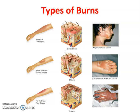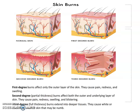The third degree burn — shown in the next picture — is where you're basically scorching and charring the skin. This can include the epidermis, definitely the dermal layer, and can even get into the hypodermis, where the fat tissue is. These are obviously the most dangerous types of burns.